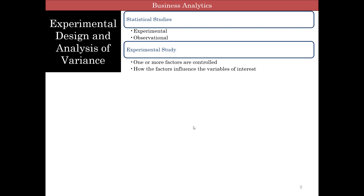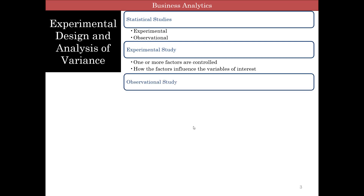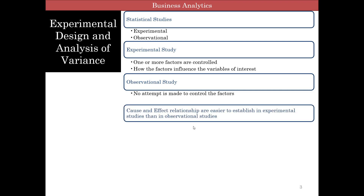The difference is that in an experimental study, one or more factors are controlled and how the factors influence the variables of interest is what is being handled. We are actually manipulating a variable and it is going to affect something else — that's an experimental study. In an observational study, we make no attempt to control the factors. Cause and effect relationships are easier to establish in experimental studies than in observational studies, and we will talk more about cause and effect when we finish all the way up to regression.